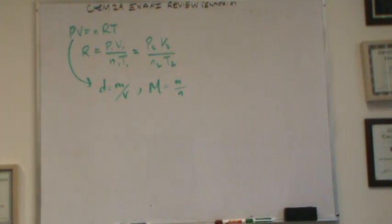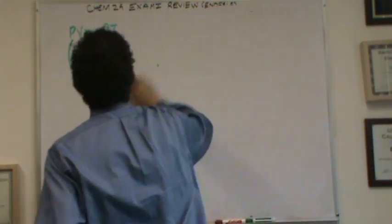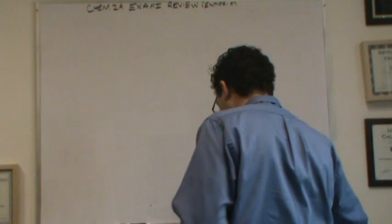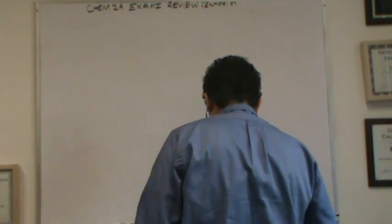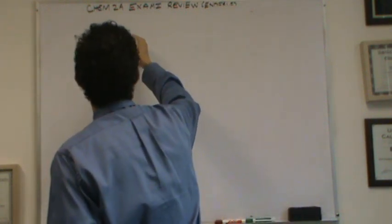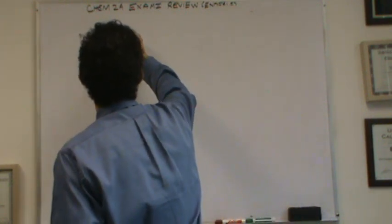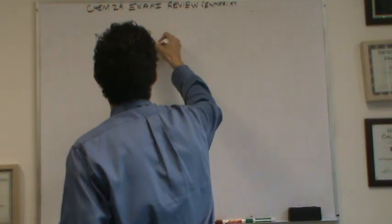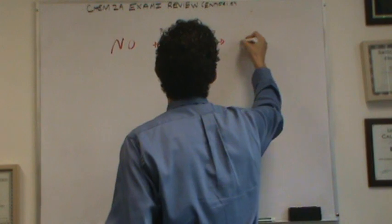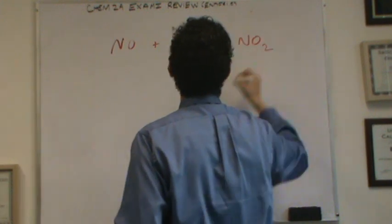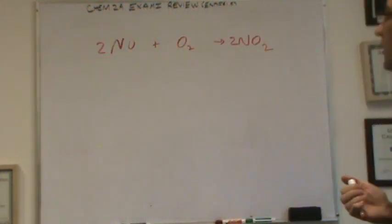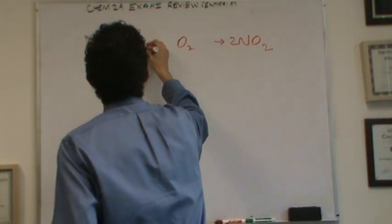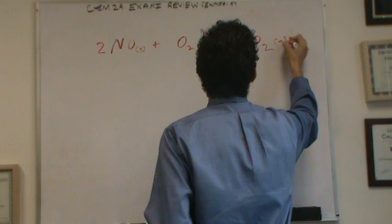All right. I'm going to move to the law of combining volumes. For the law of combining volumes, let's get a reaction on the board here. Let's say we're doing 2NO plus O2 goes to 2NO2. And let me balance this. Let's say we have this reaction. Let's say they're all gases.